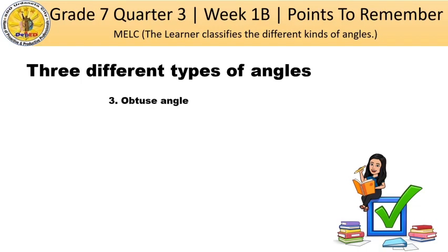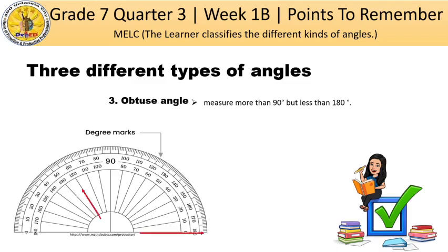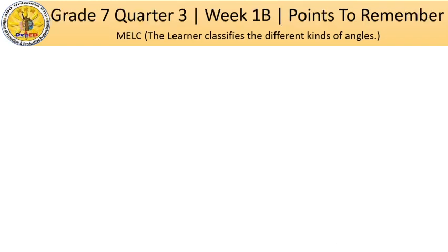The third type is the obtuse angle, which measures more than 90 degrees but less than 180 degrees. Based from the protractor, the shorter arrow has passed the 90 degrees mark but is less than 180 degrees. The measure shown is 120 degrees — that is the measure of the obtuse angle. Again, the three types of angles are: acute angle, right angle, and obtuse angle.